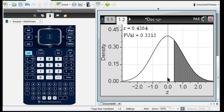You notice that it's centered at 0 because the standard normal distribution is always centered at 0 with a standard deviation of 1. And since our z is 0.4364, it's less than 1 standard deviation. This value right here is our p-value that has been shaded.